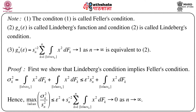Let us consider the proof. First we will show that Lindeberg's condition implies Feller's condition. We start with σ_k², which is the variance of X_k and plays an important role. Since E[X_k] = 0, σ_k² = ∫ x² dF_k. We split this integral into two sets: ∫_{|x| < εs_n} x² dF_k + ∫_{|x| ≥ εs_n} x² dF_k.